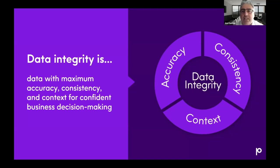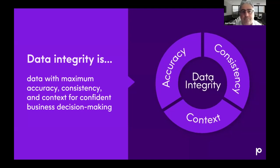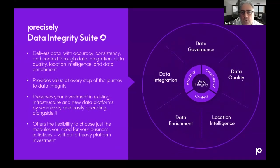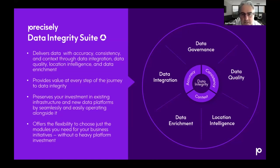Precisely brings together the best of these businesses to create an end-to-end mature product portfolio with a singular focus on data integrity. To us, data integrity is data that is accurate, consistent, and most importantly rich in context for business decision making. Our data integrity suite empowers better, faster, and more confident business decision making, delivers value in all five pillars of data integrity — data integration, data governance, data quality, location intelligence, and data enrichment — in a single modular suite, providing the flexibility to choose specific capabilities without a large platform investment.